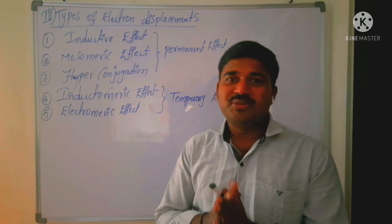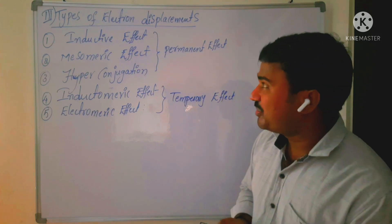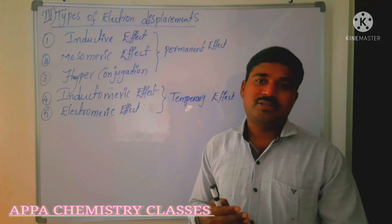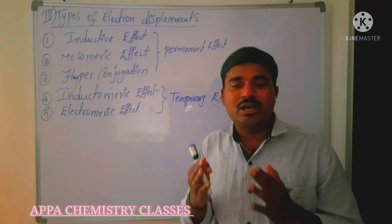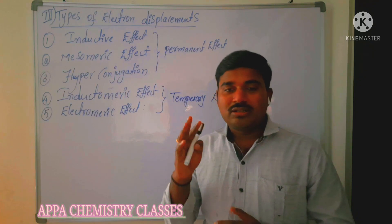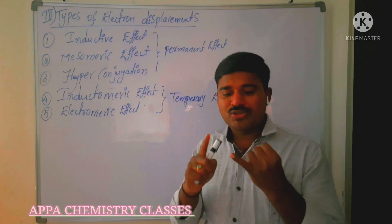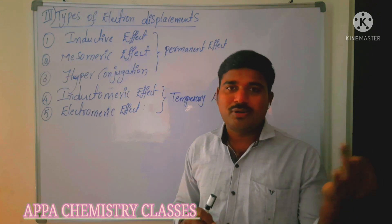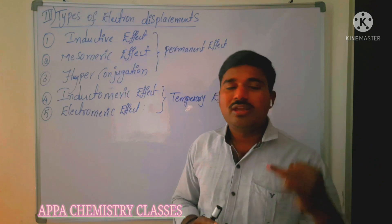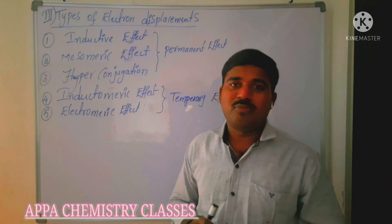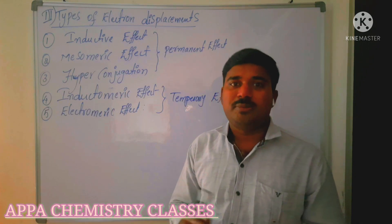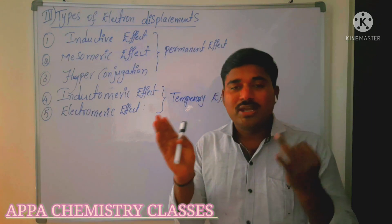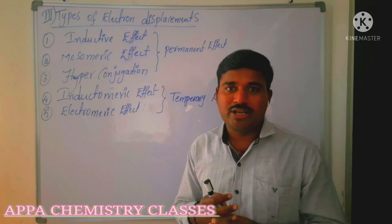Welcome to the next video on reaction mechanism, part three. In organic reaction mechanisms, three main steps are involved: first is bond cleavage or bond fission, which gives different types of intermediate compounds. Based on the stability of these intermediates, we discussed kinetically controlled and thermodynamically controlled reactions.